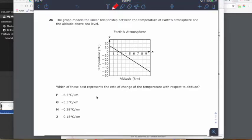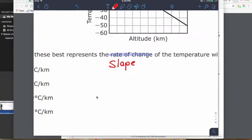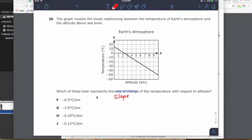Today, the graph models a linear relationship between the temperature of Earth's atmosphere and the altitude above sea level. Which of these best represents the rate of change of the temperature with respect to the altitude? The key thing here is they are asking for rate of change. First thing I'm going to say right there is rate of change. That is slope. Essentially, they're asking what is the slope of the line. I notice it's going down from left to right, so I know it needs to be negative something, which all of our options are negative.